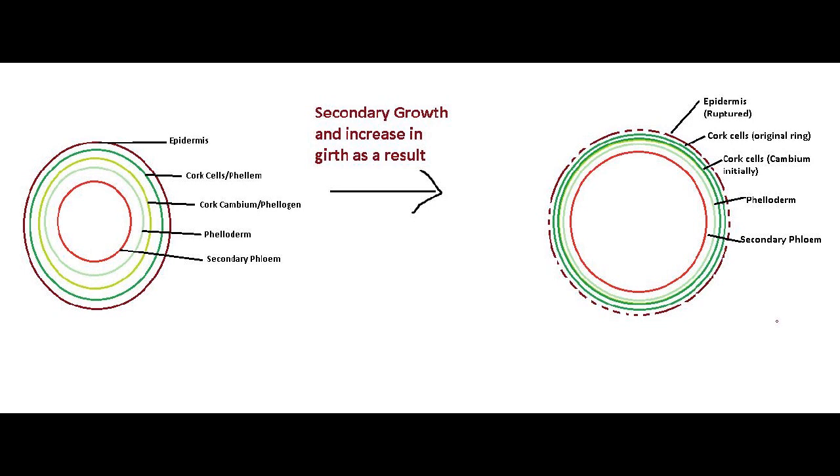Coming on to the next picture, this shows secondary growth and increase in girth as a result, which means the epidermis gets ruptured due to the activity of vascular cambium. Vascular cambium keeps on cutting phloem outside and keeps on cutting xylem on the inside. Because of this, the outer structures get crushed and they get ruptured. The cork cambium, the first layer of cork cambium which initially was formed from cortical cells by the process of dedifferentiation and regained its meristematic activity, now it will again differentiate into cork cells and a new layer of cork cambium would be formed again by the same cortical cells with the help of dedifferentiation. With this, the outer layers keep on increasing and they keep getting ruptured, and several periderm layers keep on adding.